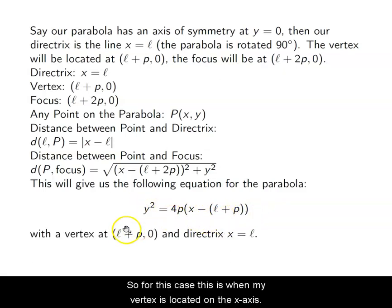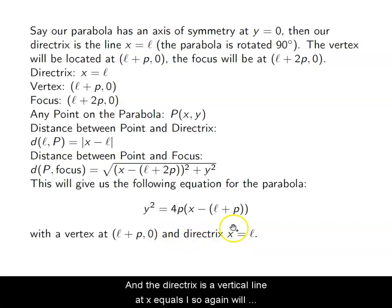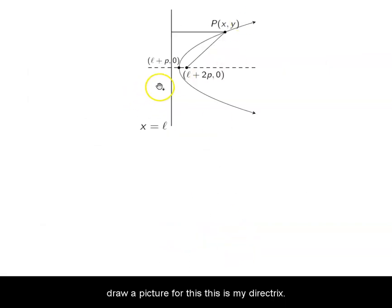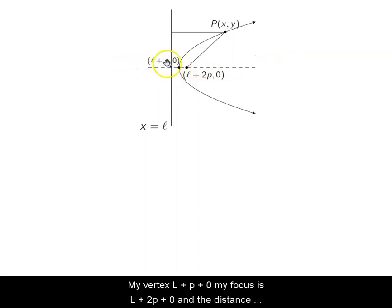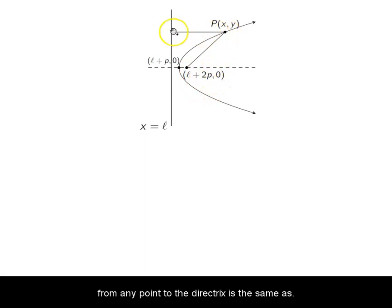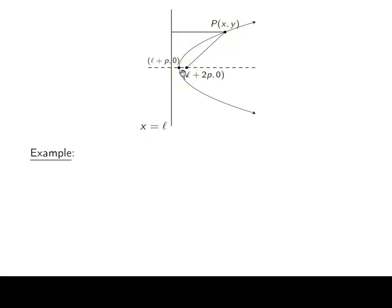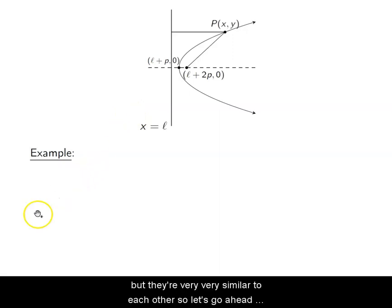So for the case where the vertex is on the x-axis and the directrix is the vertical line X = L, the equation is Y² = 4P(X − (L+P)). These are our two cases — very similar to each other, just with the X and Y roles swapped. Let's go ahead and do an example.